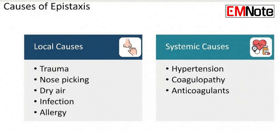Also, really dry or heated air, like in the winter, dries out the mucosa, making it crack and expose those superficial vessels. What else? Nasal infections, really bad allergic rhinitis where there's a lot of forceful blowing or sneezing, and foreign bodies — especially in kids.